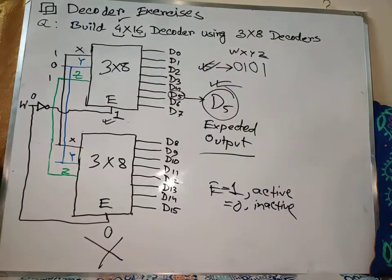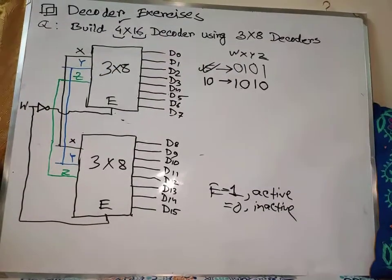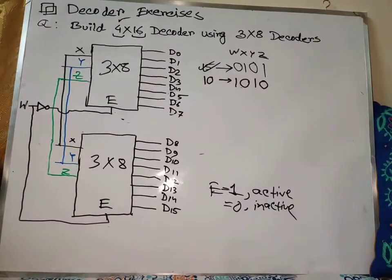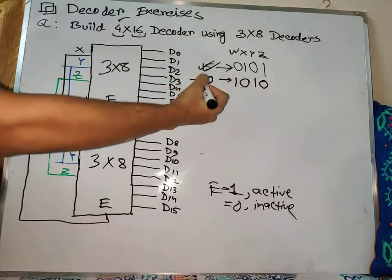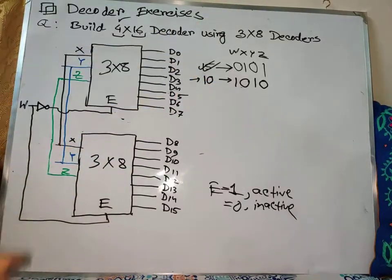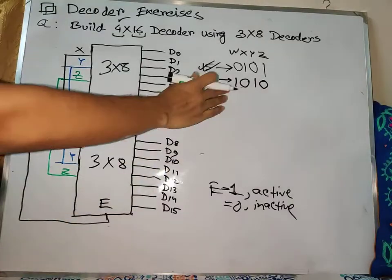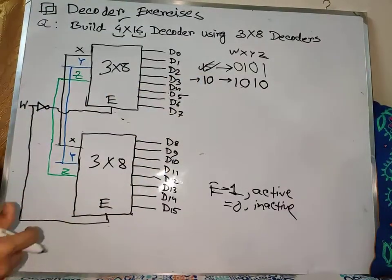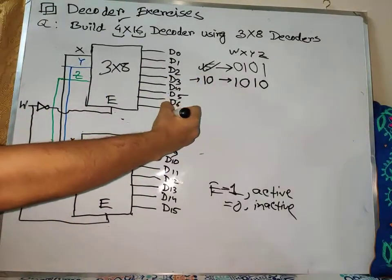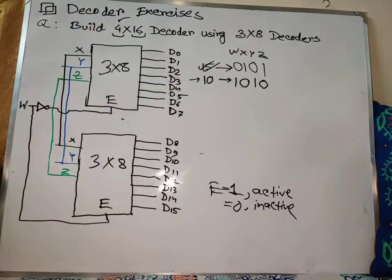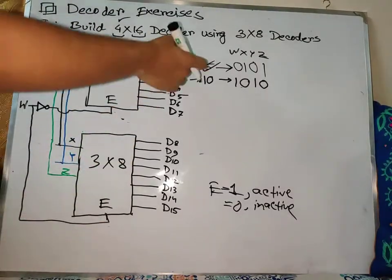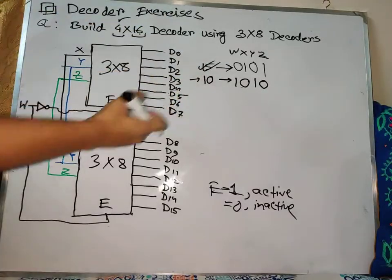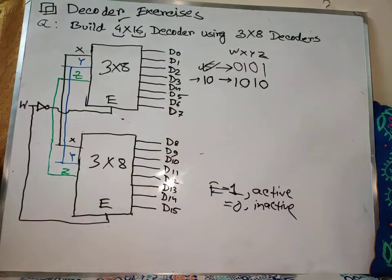So let's check another example. Here we have 10. Our expected output is 10. As a human perspective, we can see which decoder is active. The first decoder output is 0 and the second decoder is 15.